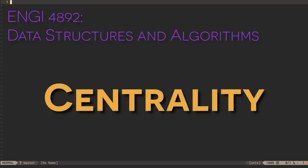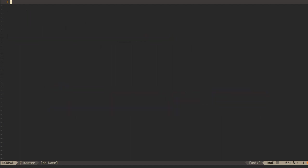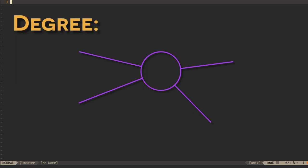Some vertices in a graph are more important than others. One way of describing a vertex's importance is centrality. The simplest measure of a vertex's centrality is degree, the number of edges that are connected to a vertex.